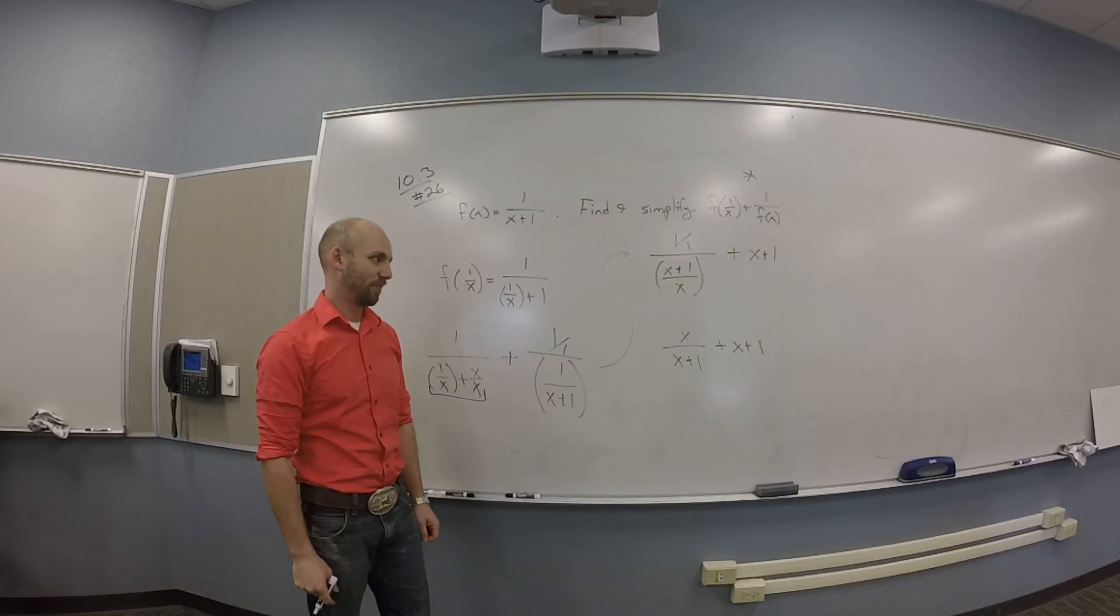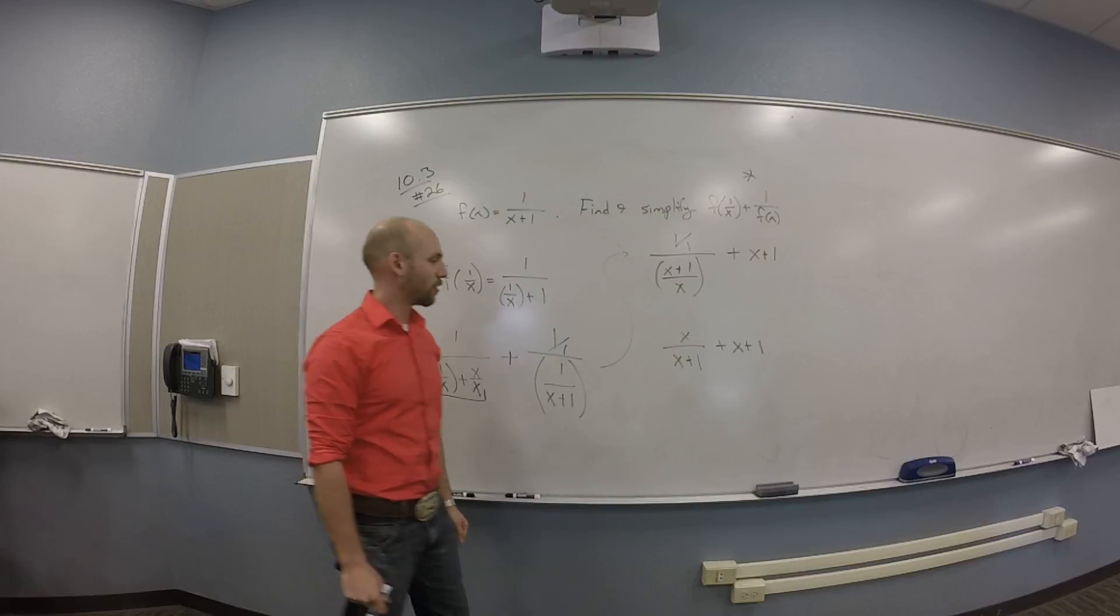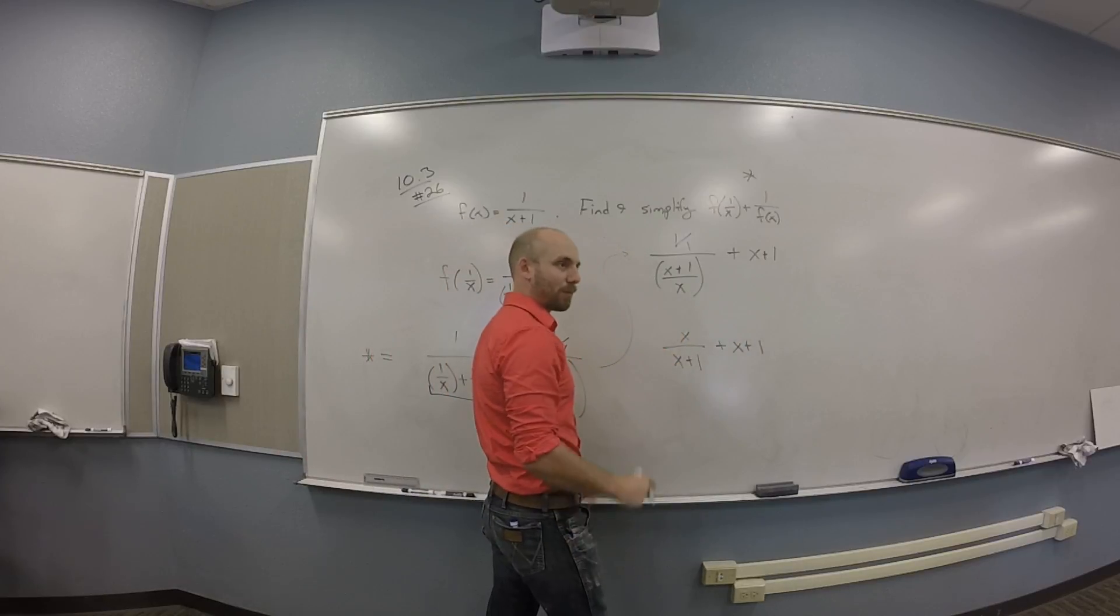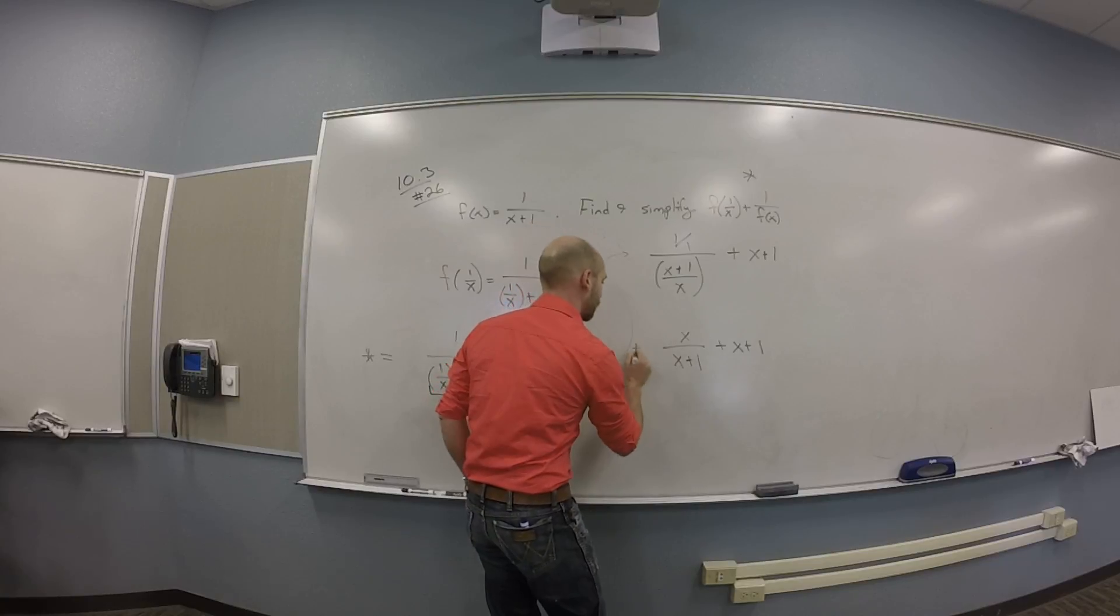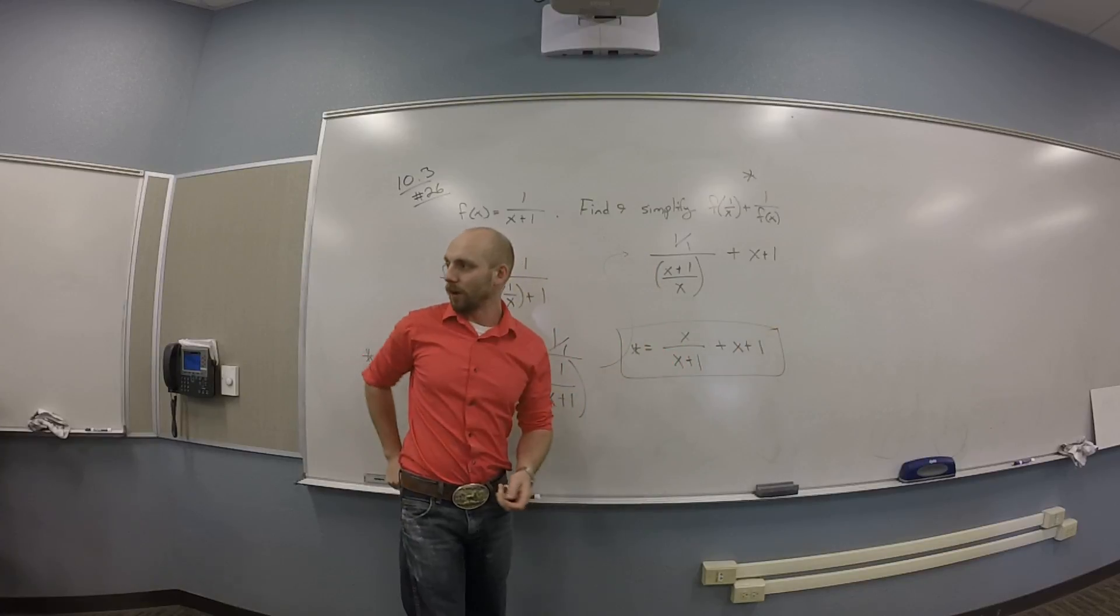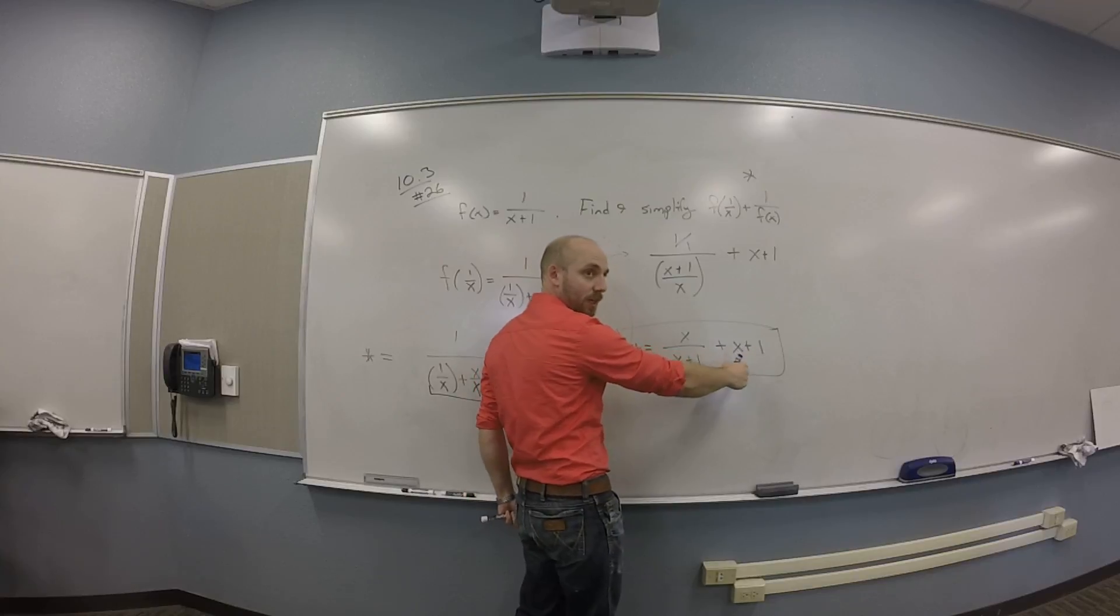So you should end up here with X over X plus 1 plus X plus 1. Yeah, you could find a common bottom here or not. Yeah, I'm okay with this in terms of simplify. If you did find a common bottom, what would it be? X plus 1. Yeah, so all told here I have star equals this thing, right? Or if I find a common bottom, the common bottom between this stuff and that stuff is X plus 1.